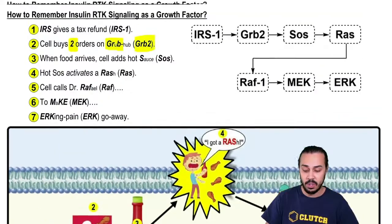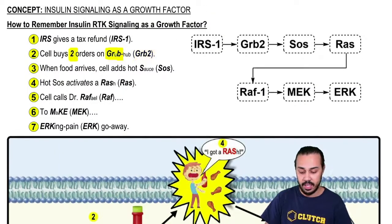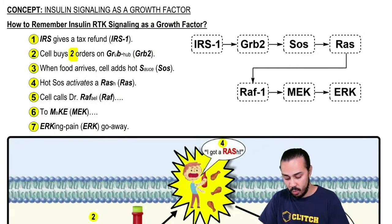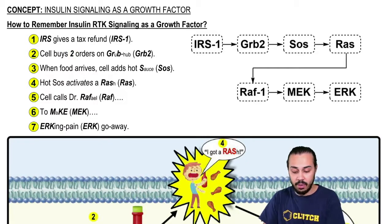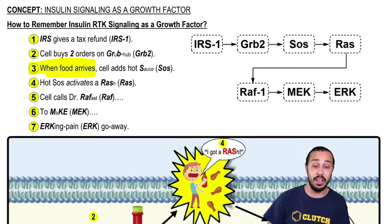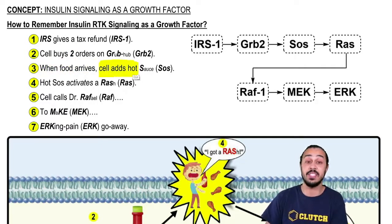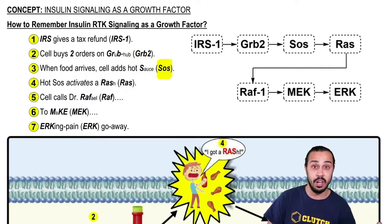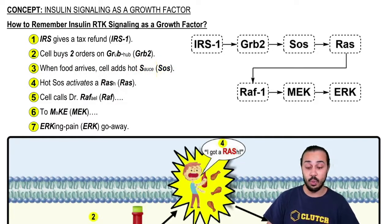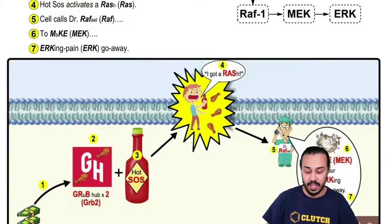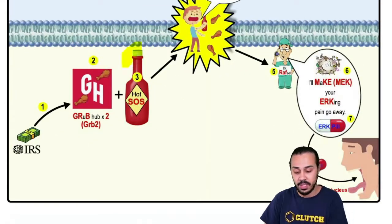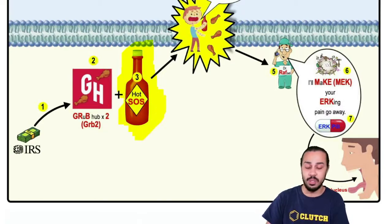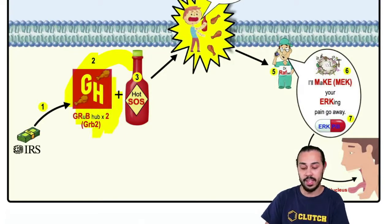This leads us to step 3. When the Grubhub food arrives, the cell decides to add some sauce — some hot sauce — to it. That reminds us of the SOS guanine exchange factor. In the image, you can see the cell adding hot sauce to the Grubhub wings.